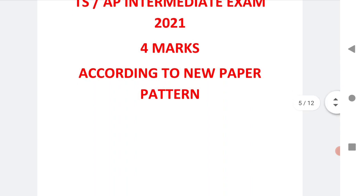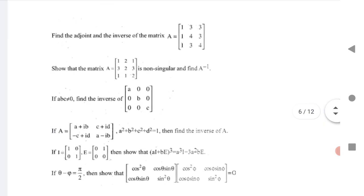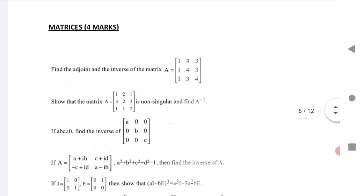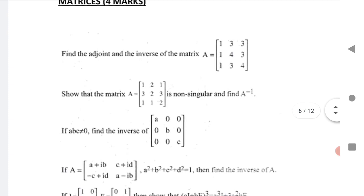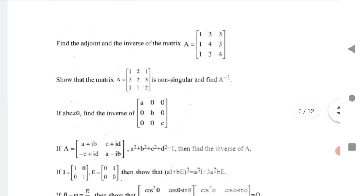Let us start the video. For 4 marks, matrices is a very important chapter. Adjoint is very important, so mostly many students practice only adjoint for two rows and two columns, but I would like to tell you if you are having a problem with two rows and two columns, practice that also. But here I have given three rows and three columns adjoint inverse of matrix.